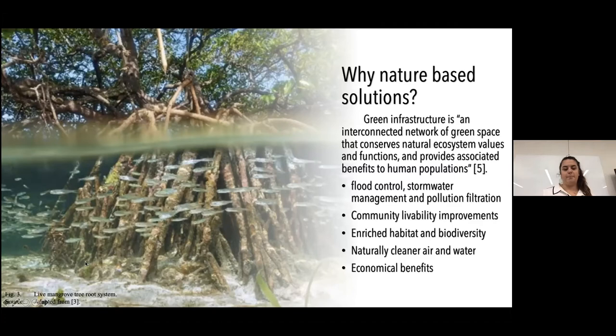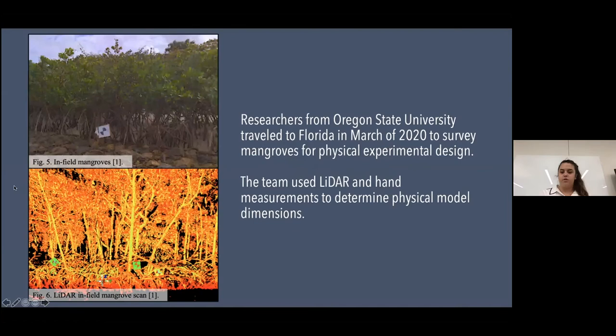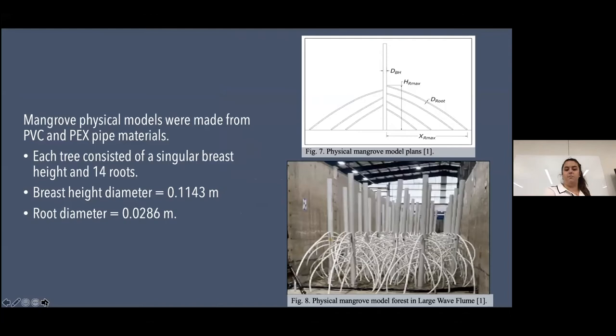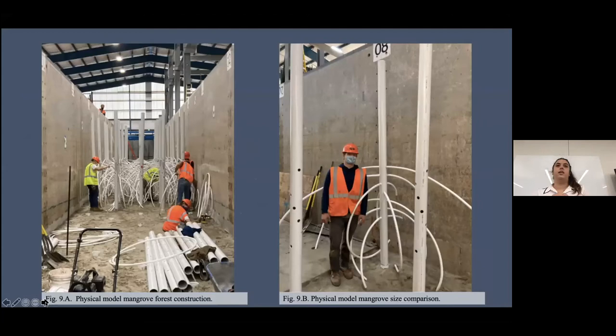Researchers from Oregon State University traveled to Florida in March 2020 to survey mangroves for physical experimental design. The team used LiDAR and hand measurements to determine physical model dimensions. The mangrove physical models were made from PVC and PEX pipe materials — each tree consisted of a single trunk with 14 roots; the trunk diameter was about 10 cm and the root diameter about 3 cm. Because we tested in the large wave flume, we were able to make these trees to the actual scale of real mangroves.